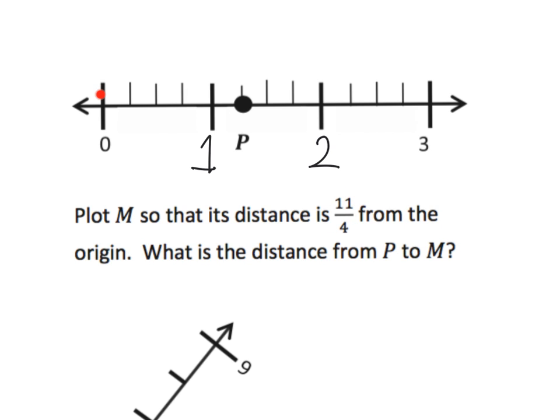So what is the distance eleven-fourths or eleven quarters from the origin? One way to do it is to count to eleven-fourths: one two three four, so that's four-fourths, five six seven eight, that's eight-fourths, nine ten eleven-fourths. So eleven-fourths is right here, eleven-fourths, and we're supposed to plot M and that is the M.